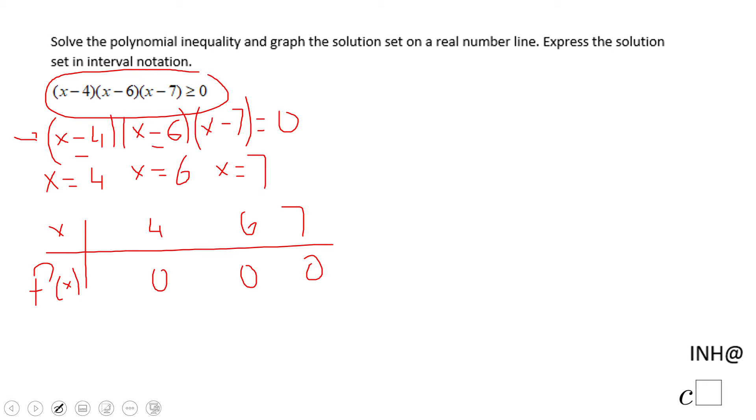This will be negative. Multiply three negative numbers, you get a negative outcome.